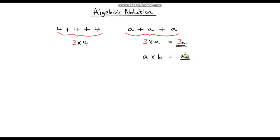The order doesn't matter, so we could write this as ba. Ab is exactly the same as ba, because multiplication is commutative — the order we multiply things does not matter. 2 times 3 is exactly the same as 3 times 2. But the reason we would write it as ab is because a comes before b in the alphabet, so generally we write our letters in alphabetical order.